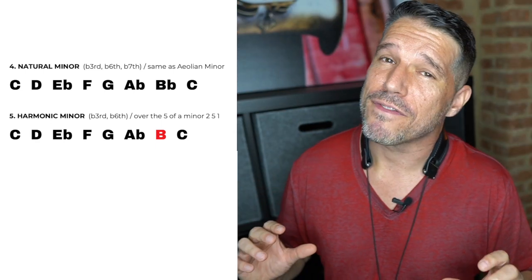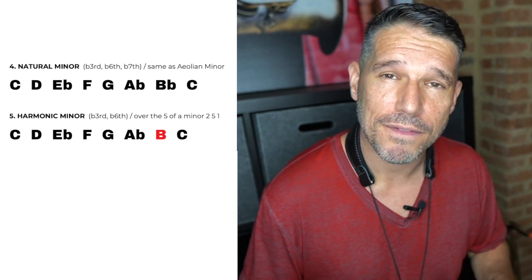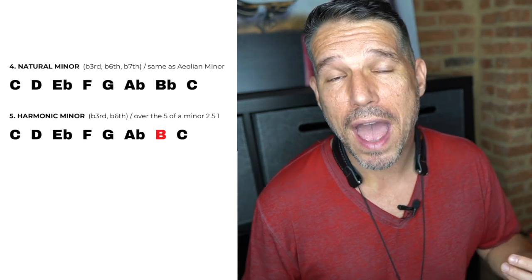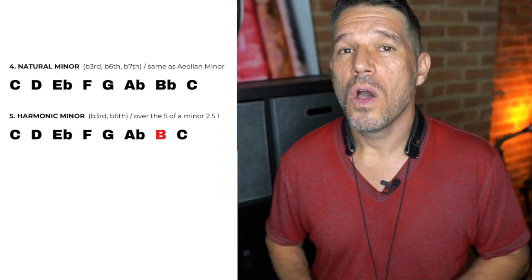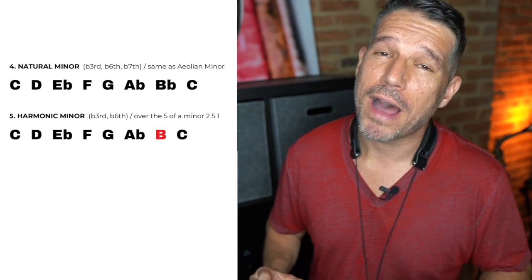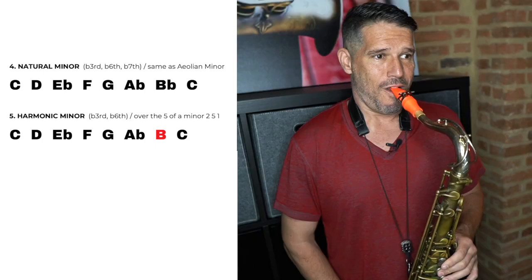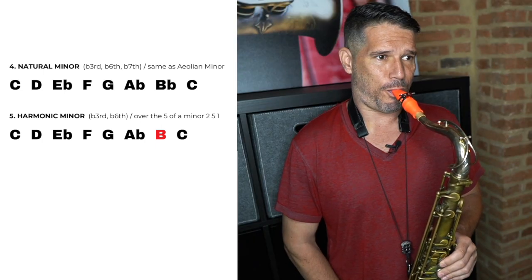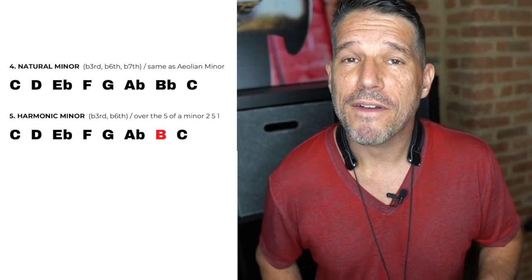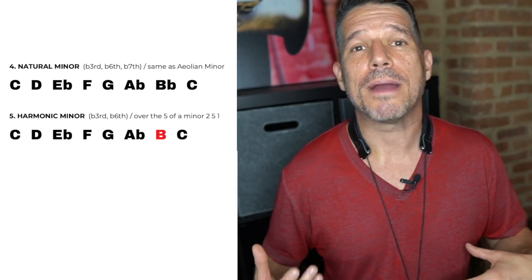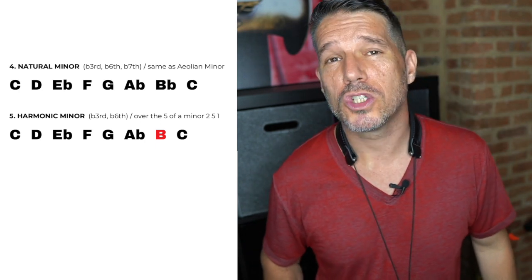This is definitely my favorite minor scale — I love the sound and use it in improv all the time. If you have a favorite minor scale, let me know in the comments below. One of the things I love most about the harmonic minor is the way it sounds when you change directions at the top. My favorite place to use it is over the five chord in a minor two-five-one.